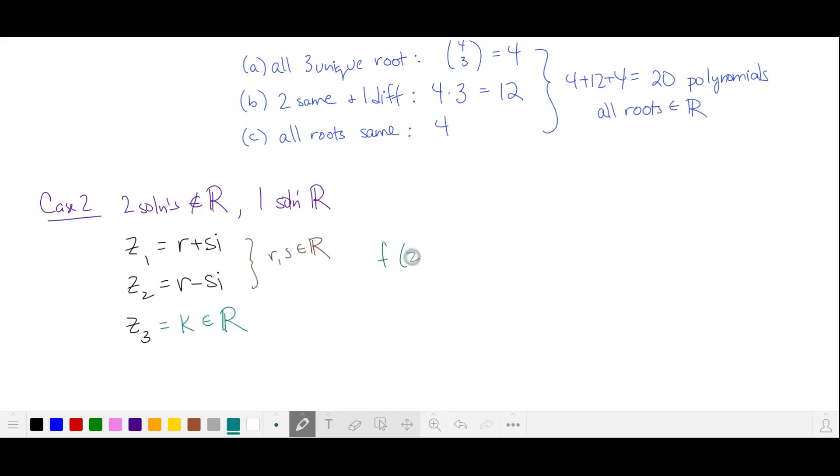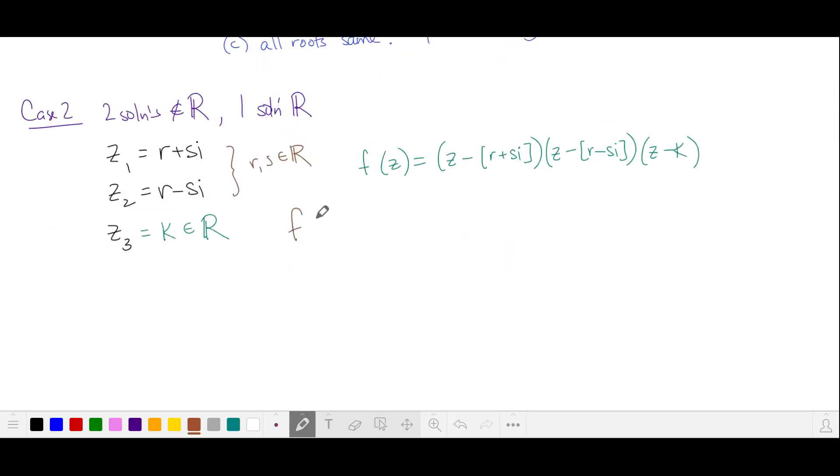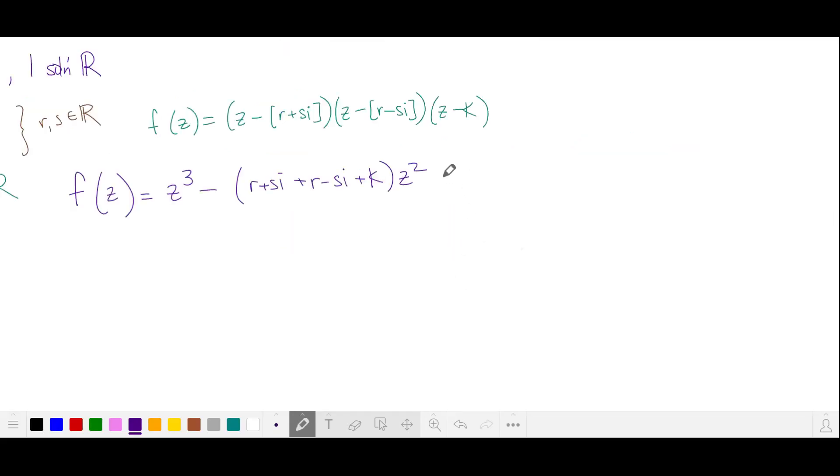So our function when it's factored is going to look like this. The product of z minus its three roots. Now we'll multiply this out using Vieta's. So the coefficient of z squared is the negative sum of the roots. And then we take the pairwise products to get our coefficient of z.